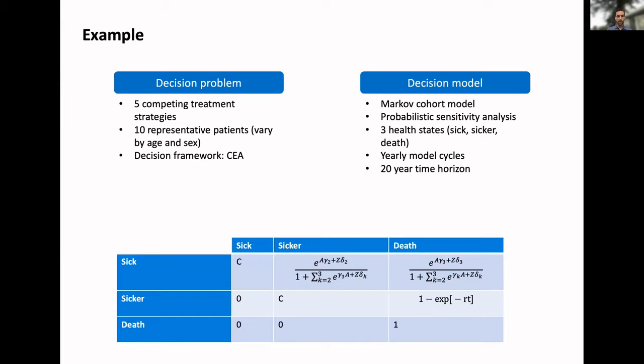I'm going to walk through a simple example. We'll have a decision problem where we have five competing treatment strategies. Say we have 10 representative patients who vary by age and sex, and we'll do a standard cost-effectiveness analysis. For the modeling, we'll do a simple Markov cohort model. We'll care about uncertainty, so we'll do a probabilistic sensitivity analysis. It's a toy example with three health states: sick, sicker, and death. Keep it simple: yearly model cycles, short 20-year time horizon.